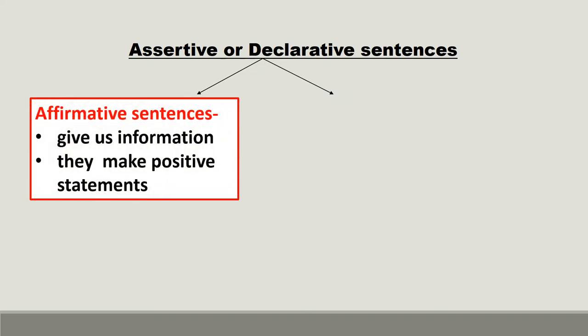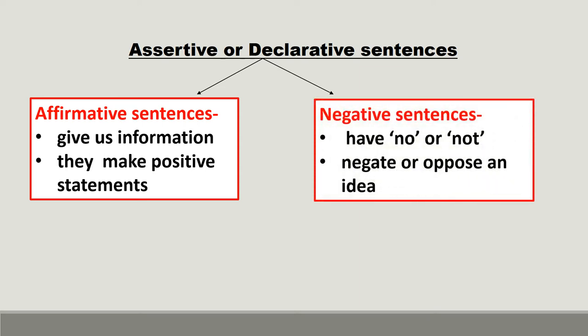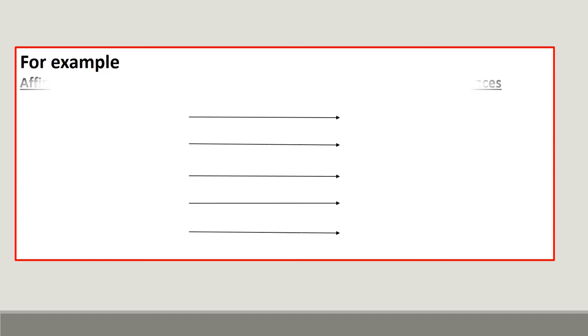Assertive or declarative sentences are of two types: affirmative sentences and negative sentences. Affirmative sentences are also known as positive sentences. These sentences give us information and make positive statements. Whereas negative sentences have 'no' or 'not' — they negate or oppose an idea. With the help of some examples, we will see how we can change an affirmative sentence into a negative sentence by adding 'no' or 'not'.